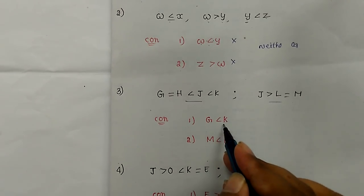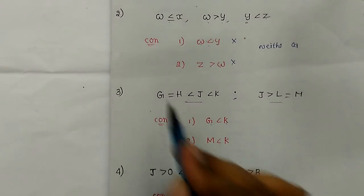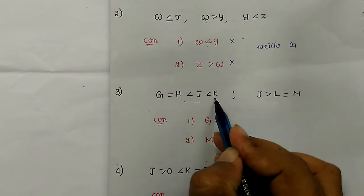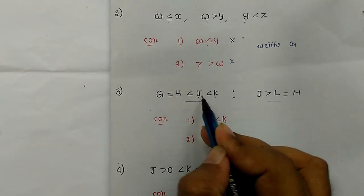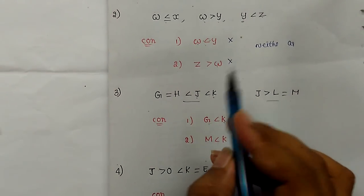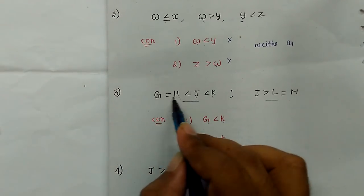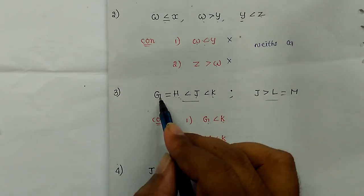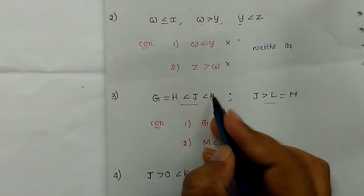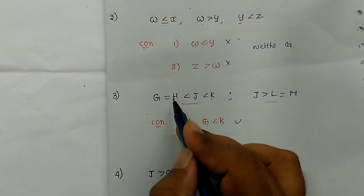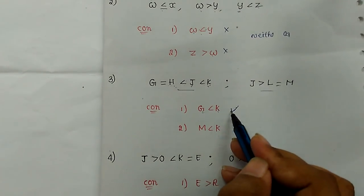Here, G less than K, so K to G travel. K to J — door open. J to H — door open. H to G — door open. So K to G: travel through all open doors. Observe the second statement: K to G travel, then G to H travel, then H equal to G — equal to is one time travel. So K to J door open, J to H door open, H to G door open — K to G is confirmed.